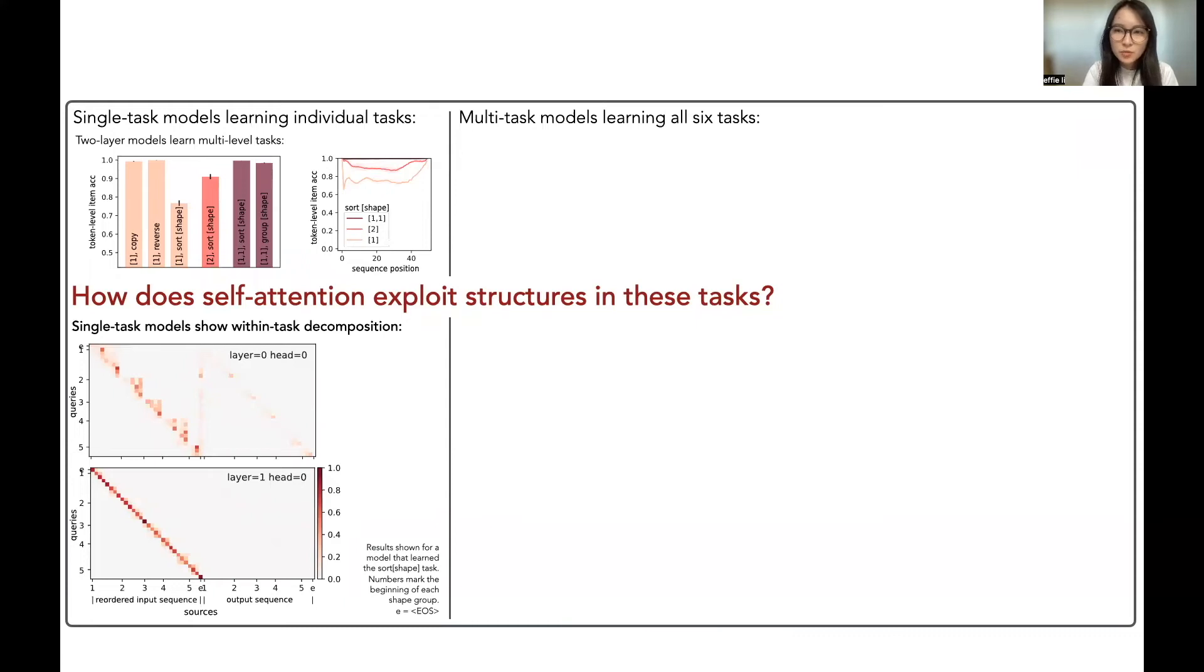Items in the input sequence are reordered to match their output order for visualization, and the numbers denote the beginning of each shape group. We find that the attention head in the first layer attends to the unsorted items in the current shape group and increases attention to the end of sequence token toward the end of sorting each group. The second layer then almost exclusively attends to the next token to be generated in the output sequence.